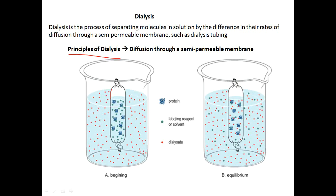In a dialysis tube we have a protein or DNA and a reagent interacting with it, placed in a dialysis buffer solution. Agitation or shaking is done for several hours, then it is left to equilibrate. When equilibrium is reached, the concentration of the particular species has equal concentration both inside and outside the dialysis tube — that is what equilibrium means.